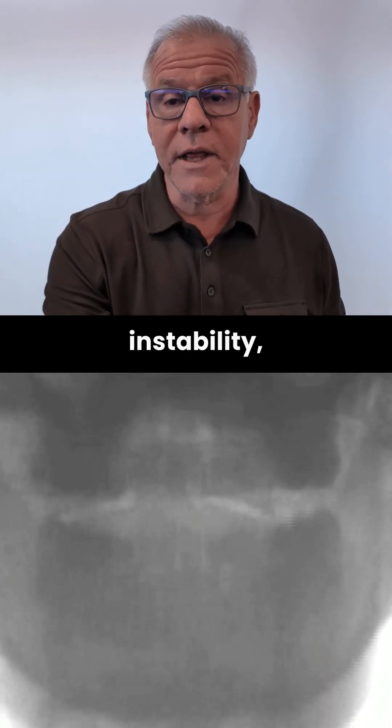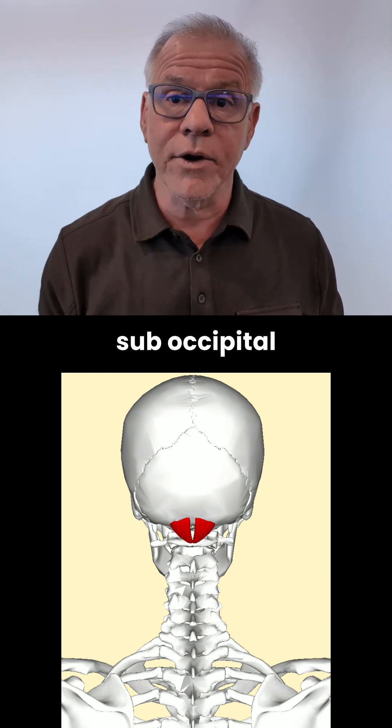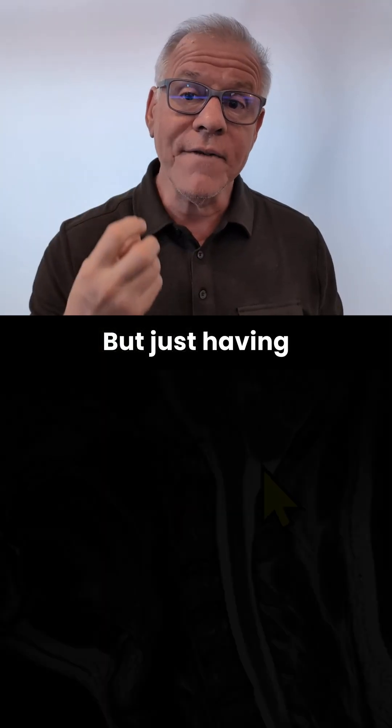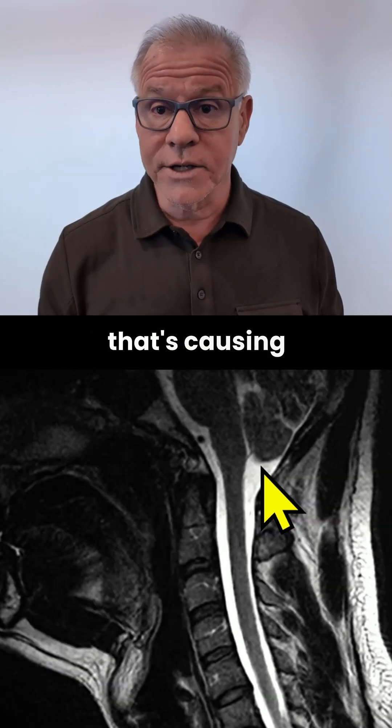For example, craniosacervical instability, atrophy in the mains of occipital muscles that then kick off symptoms. But just having Chiari on an MRI doesn't mean that that's causing your symptoms.